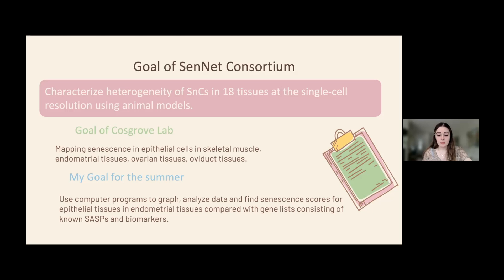Biomarkers of senescence are important because they help to detect senescent cells and show that senescent cells accumulate at sites of aging-associated diseases in aged tissues. Senescence-associated secretory phenotypes, or SASPs, are a component of the senescent phenotype that have evolved to signal the presence of senescent cells to the immune system and promote their elimination, but when senescent cells persist, their SASP becomes detrimental.